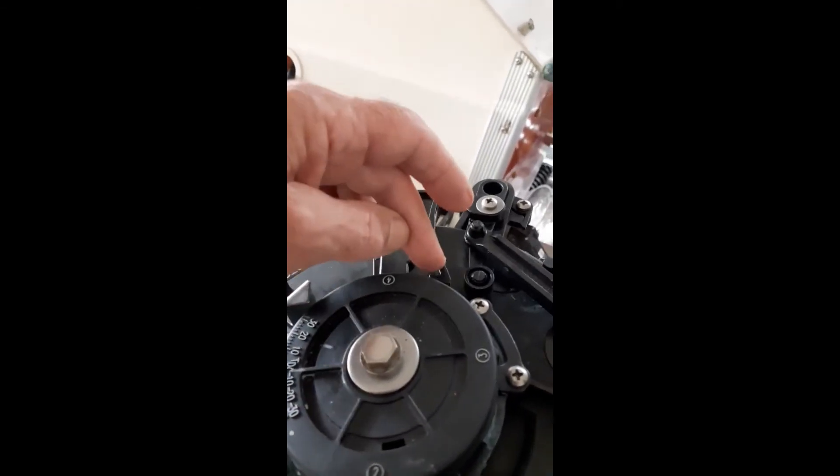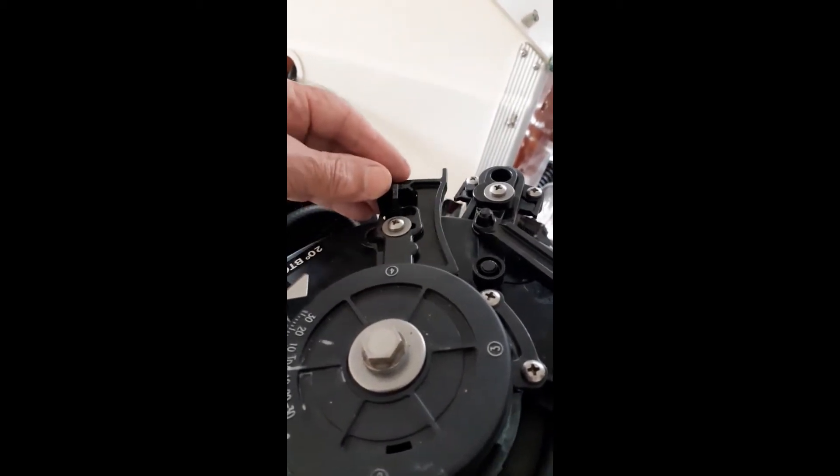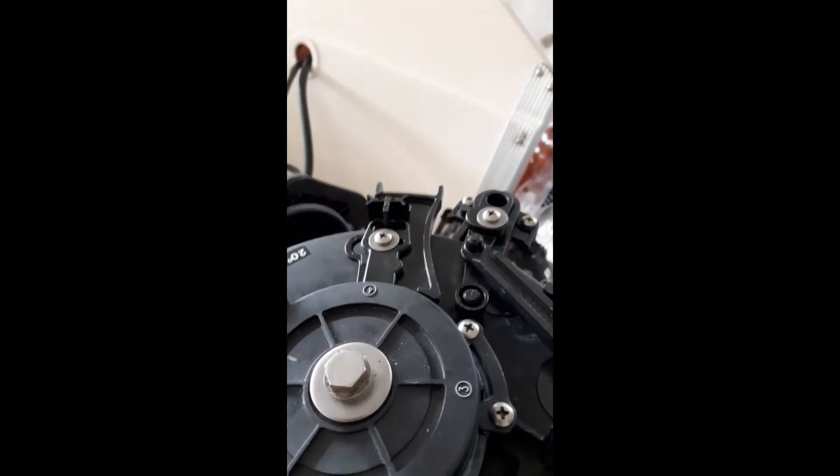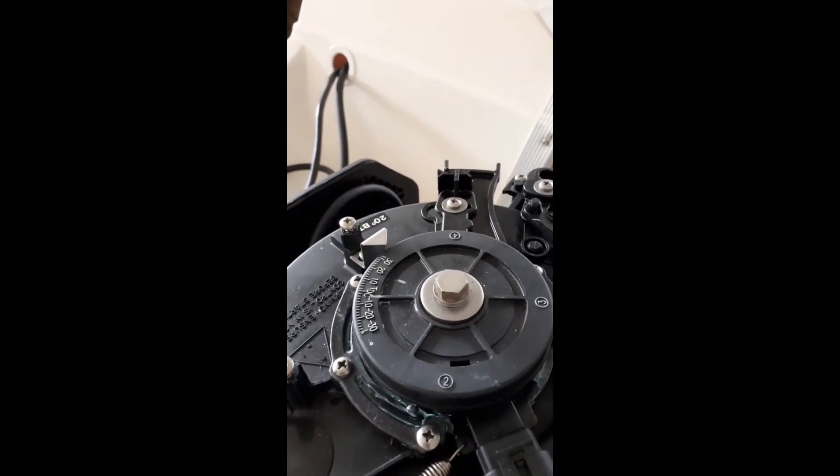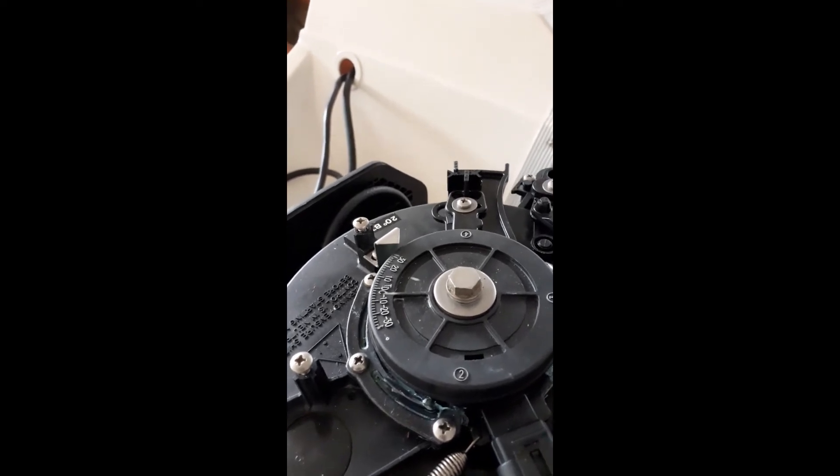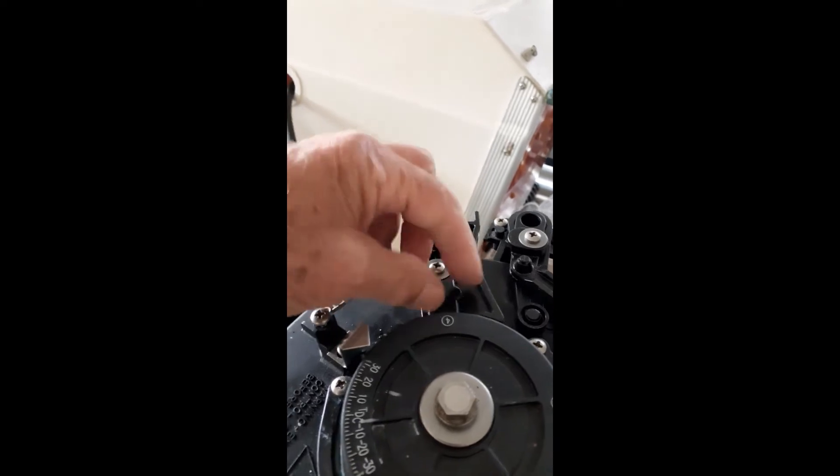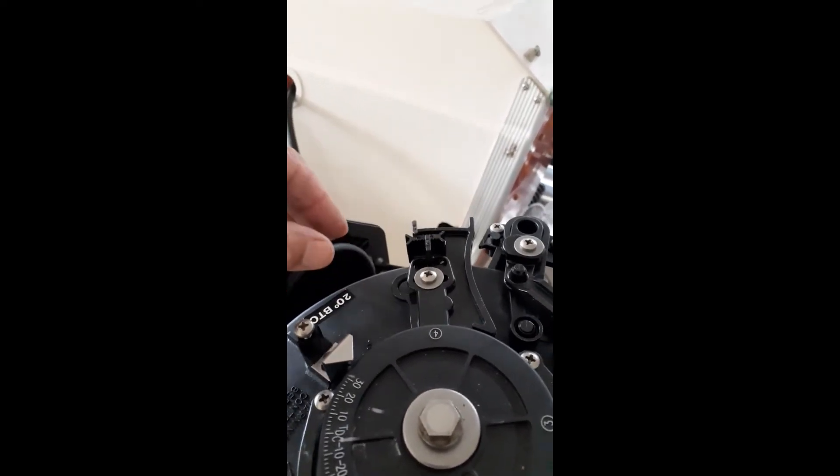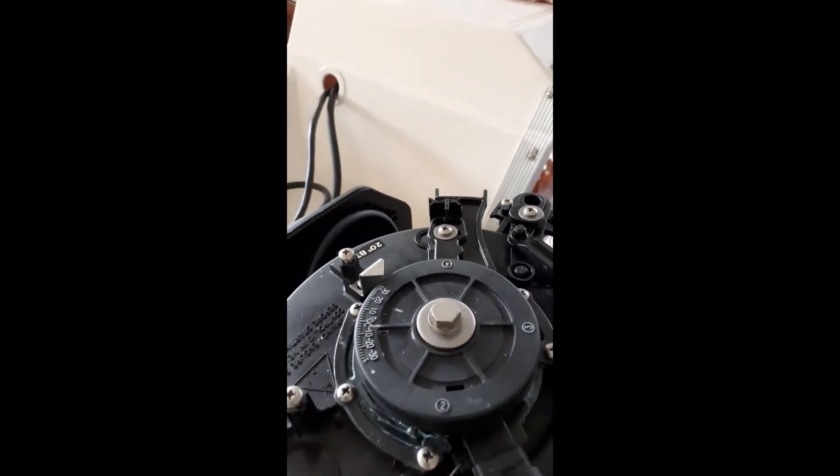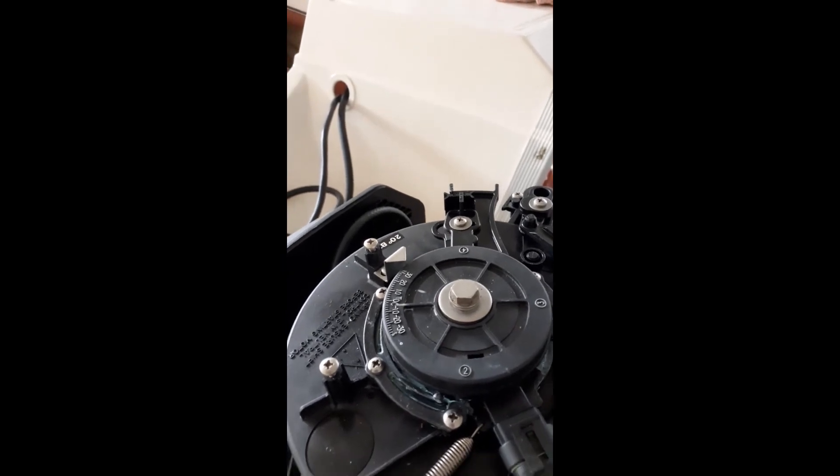The first thing you do is the low speed one, making sure that this is right back as far as it'll go. Then using the timing light and the starter, you can set the timing. You adjust it by loosening the screw off here and sliding the low speed thing around until you get the right timing. I'm going to run out of hands to actually demonstrate this.